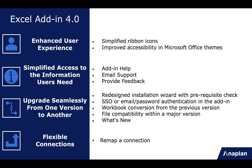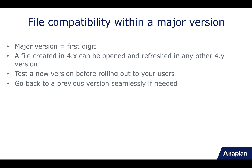We've also solved file compatibility within a major version. A major version is indicated by the first digit, so 4.0, 4.1, and 4.2 are all part of major version 4. A file created in any 4.x version can be opened and refreshed in any 4.y version — for example, a file created in 4.3 can be opened in 4.5 or 4.1 seamlessly. This is very useful: if your users are on 4.0 and you want to test 4.1 first, you can still refresh files in 4.1 and send them to people still on 4.0. You can also go back to a previous minor version if needed.